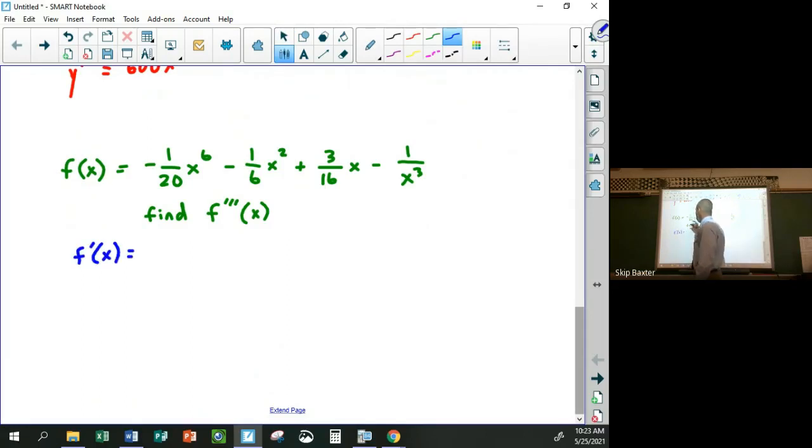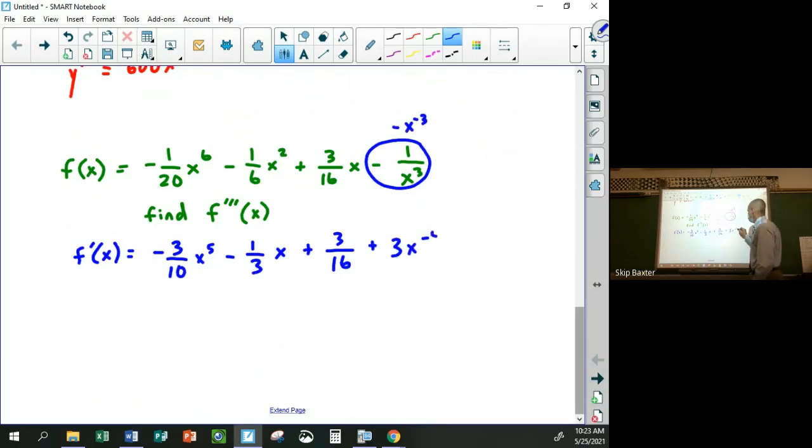So f prime of x, this would be negative 6/20ths, which is negative 3/10ths x to the 5th. And then this is 2/6th, which is 1/3rd. Negative 1/3rd x plus 3/16ths. And then this term right here is really minus x to the negative 3. So it's going to be plus 3x to the negative 4.